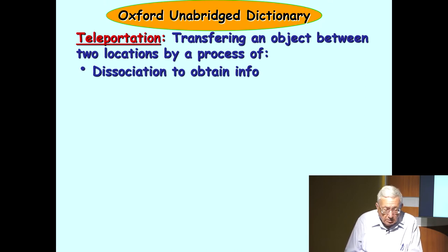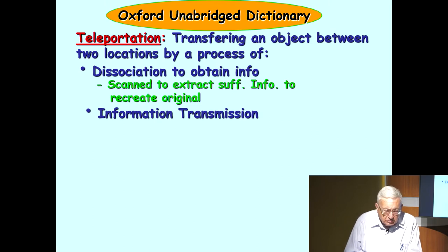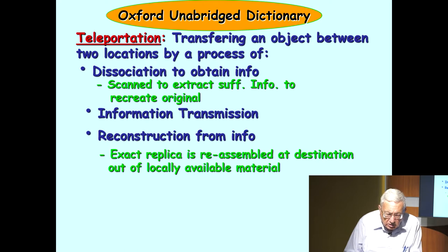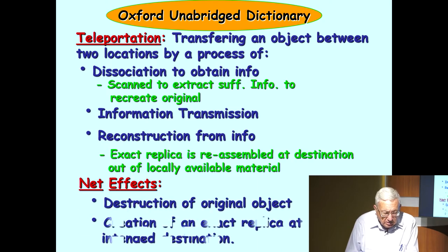What is teleportation? Teleportation means transferring an object from two locations by a process of dissociation to obtain information. So you destroy the object as you are scanning it. Scan to extract sufficient information to recreate original. That information is transmitted by classical means to a new location. And at that new location, it's reconstructed from the information. Each replica is reassembled at the destination out of locally available material. Net effect is destruction of the original object and creation of the exact replica at the intended destination. This is what is meant by teleportation.